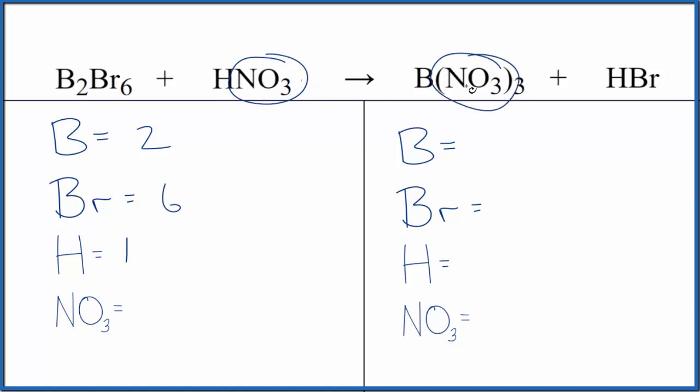So since we have it on both sides, we're going to count it as just one thing. That makes the balancing a lot quicker. You get the same answer either way, this is just faster. One nitrate.